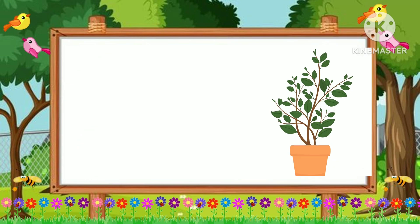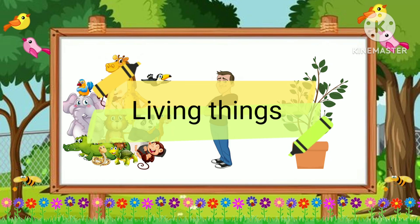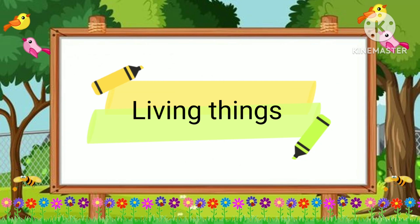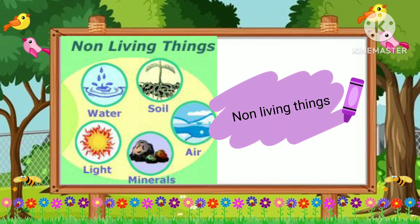Plants, animals, and human beings are natural things that are living, while sun, moon, air, and water are also natural things, but they are non-living things.